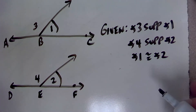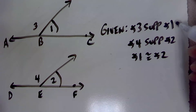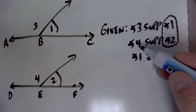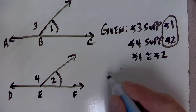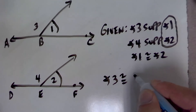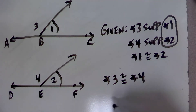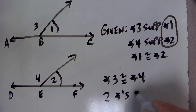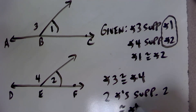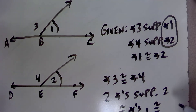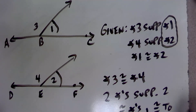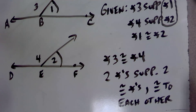Since we know that angle 1 and angle 2 are congruent, and those same two angles are supplementary to angle 3 and angle 4, we can state that angle 3 is congruent to angle 4. That is because two angles supplementary to two congruent angles are congruent to each other.